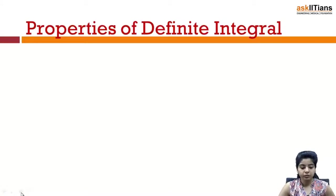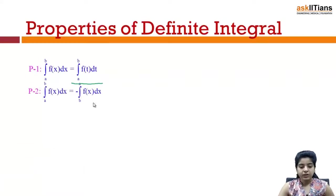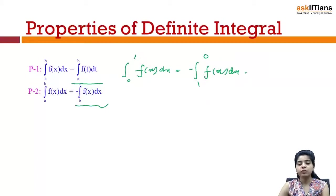First property says that integral a to b fx dx equals integral a to b ft dt. Second property says integral a to b fx dx equals minus integral b to a fx dx. That means if you need to interchange your limits, you'll have to put a negative sign in front. For example, integral 0 to 1 fx dx can be written as integral 1 to 0 fx dx with a negative sign.